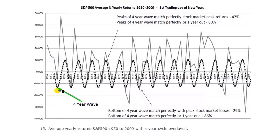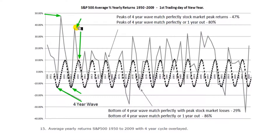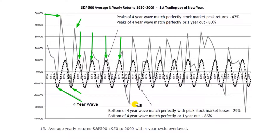We started the theoretical four-year wave here, and you can see the peak stock market returns. In 1954 and 1955, you can see a peak of 48% return, and then exactly on the trough of the wave we saw a negative market return. One year out, you can see the theoretical wave and the actual market return slightly out, but then the following four-year cycle exactly predicted the peak market return. This was one year out from the peak — the theory suggested 1971, but it was actually 1972. The market trough was also one year out.